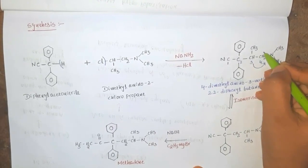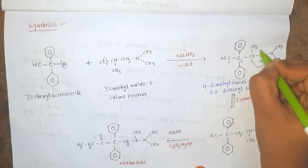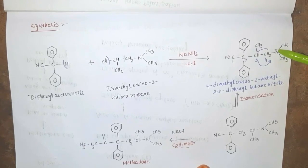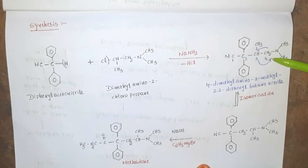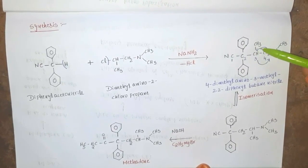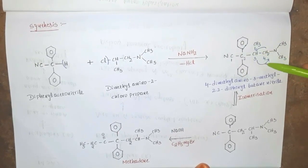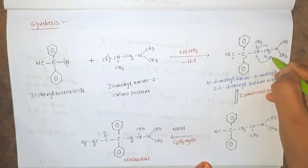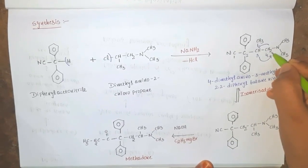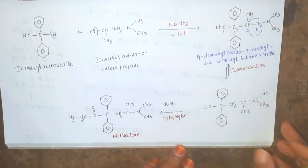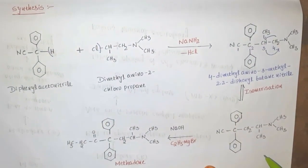Upon isomerization of this intermediate, the methyl group is changed to the fourth position and the hydrogen is changed to the third position. Isomerism means the same chemical formula but a different chemical structure. That is why the methyl group moves to the fourth position and the hydrogen moves to the third position, forming the next intermediate.